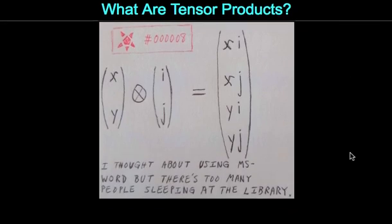So what are tensor products? We have, on this side we have two vectors here, x, y, cross, i, j. I've got to find out what that thing is actually called. I think it is called a cross, but either way.